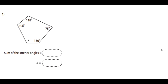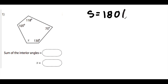Today we're going to be looking into finding the angle sum of irregular polygons and then using the angle sum to help us find a missing angle within that polygon. To find the angle sum, we use the formula S = 180 times (n minus 2), where n stands for the number of sides. Looking at our polygon, it has 1, 2, 3, 4, 5 different sides.